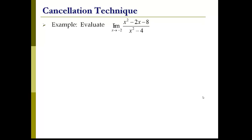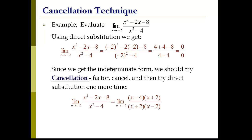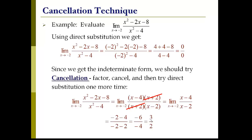If direct substitution fails, we use cancellation — factoring and canceling out the things causing trouble. For example, looking at a function's limit as x approaches negative 2, direct substitution gives us 0 over 0, which is called an indeterminate form. We can't figure that out, so we try cancellation: factor the function, cancel anything we can, and see if that eliminates the 0 in the denominator. If we factor the numerator and denominator, the x plus 2 terms cancel out. Then using direct substitution of negative 2, we get 1.5. So the limit of this function as x approaches negative 2 is 1.5, or 3 over 2.